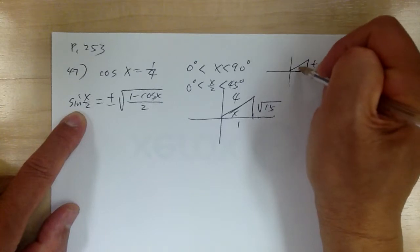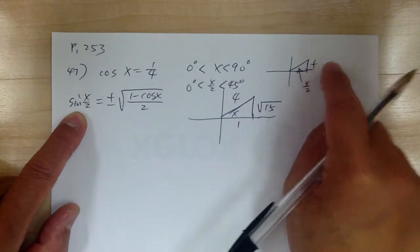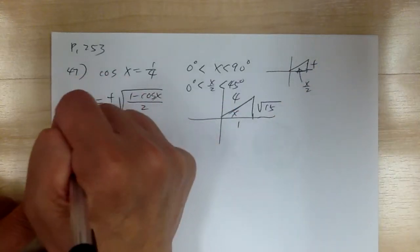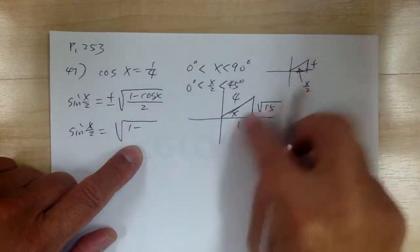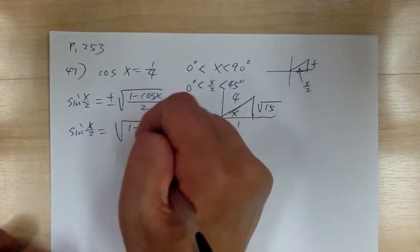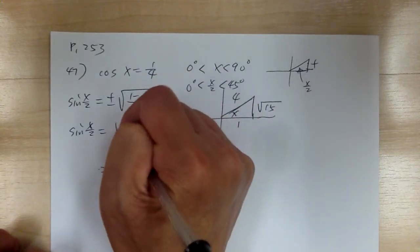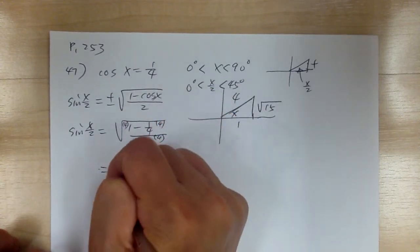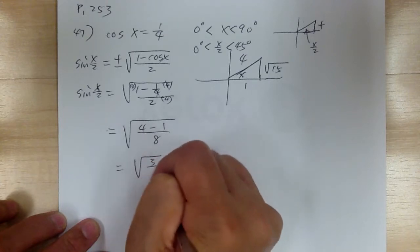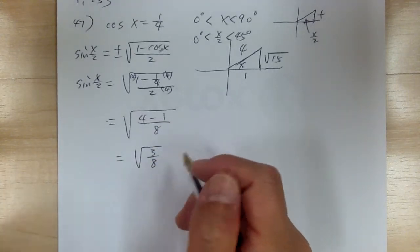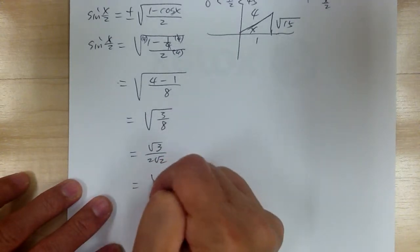So sine of x over 2 equals positive square root of 1 minus cosine x over 2. Cosine of x is 1 over 4, so you have 1 minus 1 over 4 over 2. Multiply by the common denominator 4, giving 4 minus 1 over 8, which is 3 over 8. So this equals square root of 3 over 8. To simplify, that's square root of 3 over 2 root 2; multiply by root 2 over root 2 to get square root of 6 over 4.